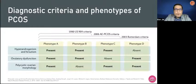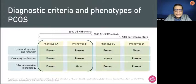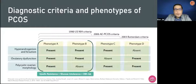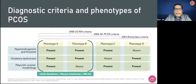What is common in phenotypes A, B, and C — very important in our discussion — is the presence of hyperandrogenism in all of these phenotypes. Phenotypes A and B are what we call classic PCOS. This is particularly important because insulin resistance, glucose intolerance, and risk for diabetes are seen mostly in phenotypes A and B.